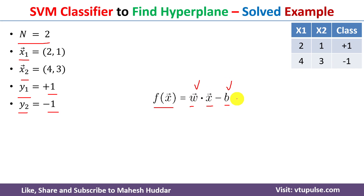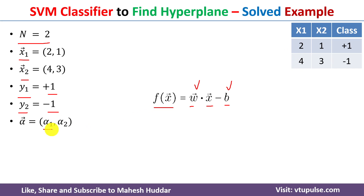To calculate the weight and bias, we need to find the values of two variables — alpha 1 and alpha 2 — because there are two examples. So the alpha vector is equivalent to alpha 1 and alpha 2 in this case.